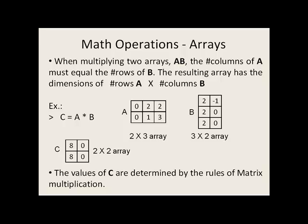When multiplying two arrays, the number of columns of A must equal the number of rows of B. In this case, that number is 3. The resulting array has the dimensions of the number of rows of A times the number of columns of B, and the values in C are determined by the rules of matrix multiplication.